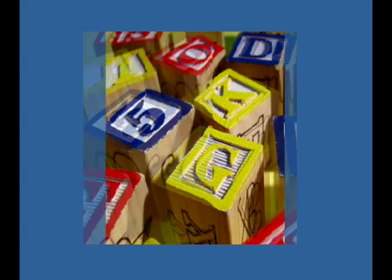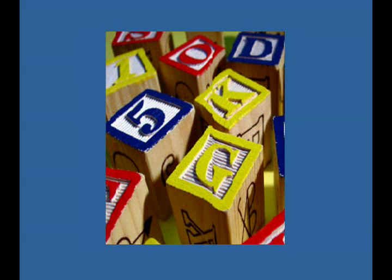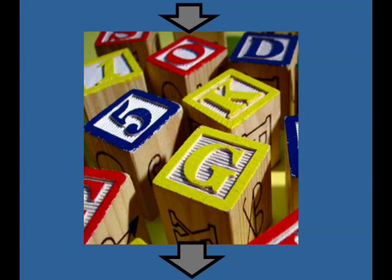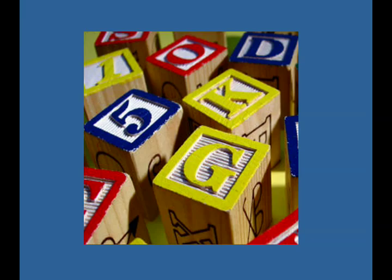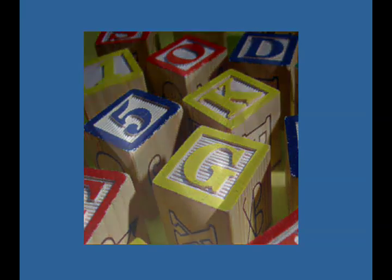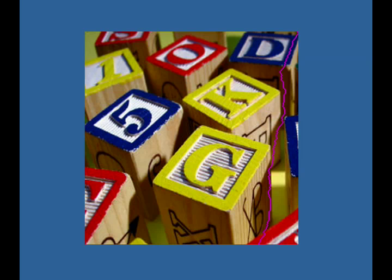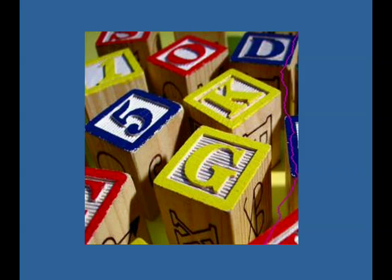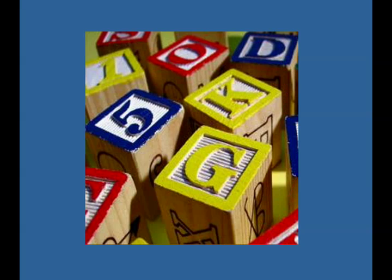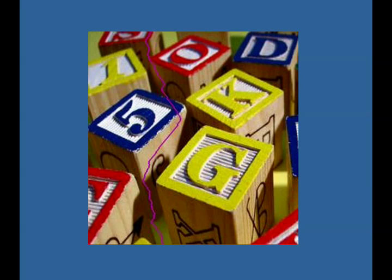However, using such an approach quickly leads to serious artifacts. Therefore, instead of using rigid columns, we search for connected paths of pixels, or seams, from one side of the image to the other that contain the least energy. This can be done using a simple dynamic programming algorithm as described in the paper, in both vertical and horizontal directions.